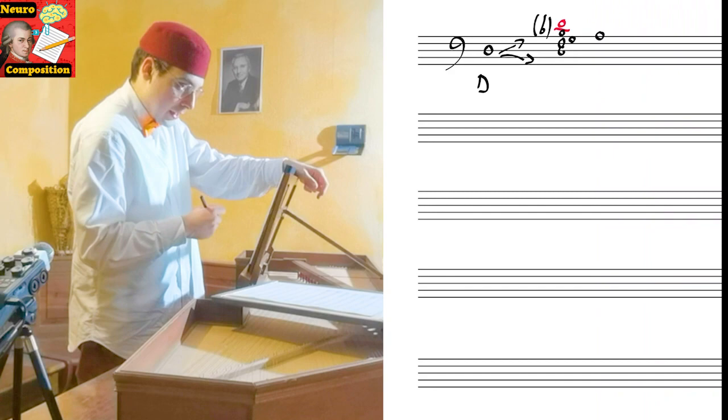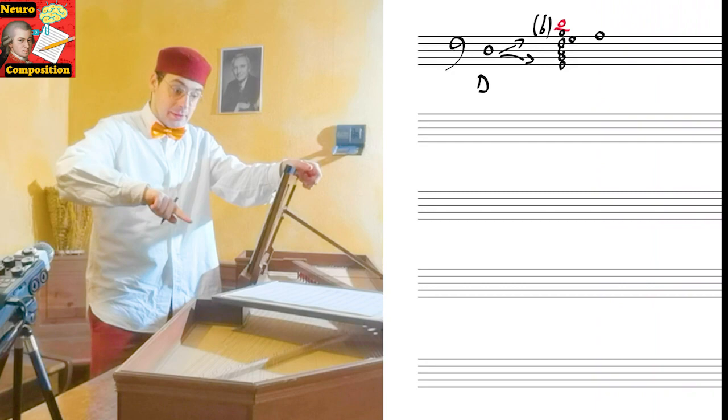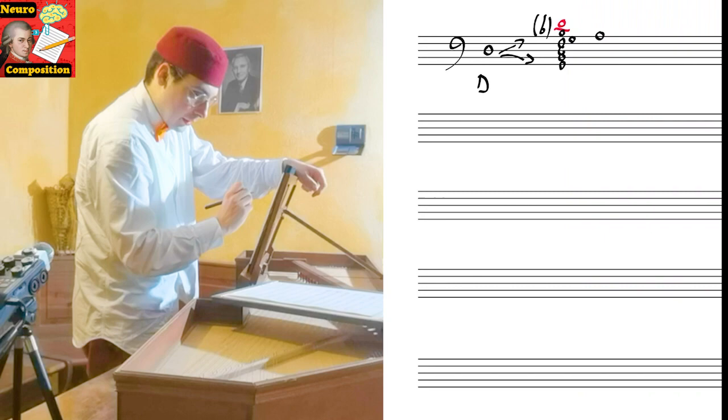Then we don't have the fifth, because the fifth inverted is a fourth, so the fourth is a dissonance. Okay? Perfect. Now we have the sixth, that is a third on this note. Sixth, also in this case, according to the renaissance style, flat sixth, so minor sixth. And now, this is going up. Going down instead we have obviously the unison.